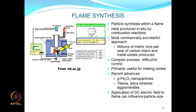In flame synthesis, combustion reactions are used to produce high temperatures, and particles are synthesized in the flame itself. Liquid aerosols are injected into the flame and particles form by burning these droplets. This is the most commercially viable approach — millions of tons of carbon black and metal oxides are produced this way. However, combustion is not a very repeatable or reproducible process, so the particle size distribution may vary between runs. It is a good process for making oxides such as Fe2O3, titania, and silica.